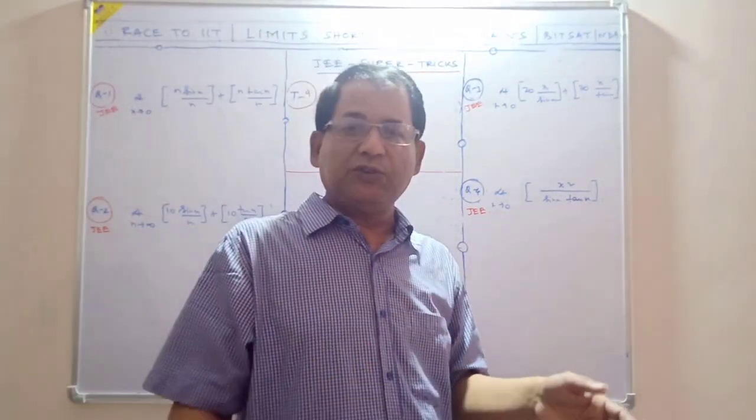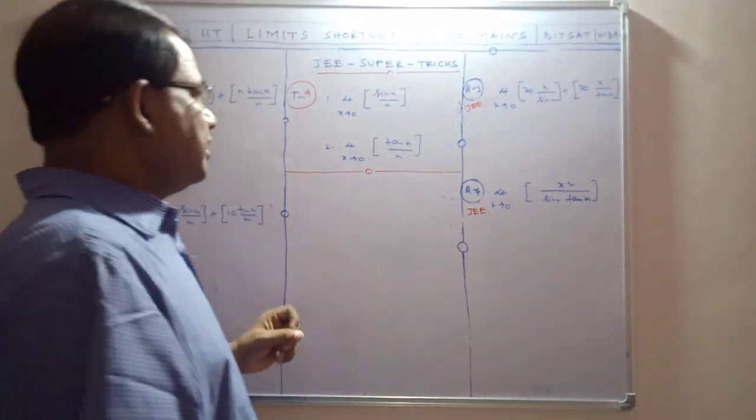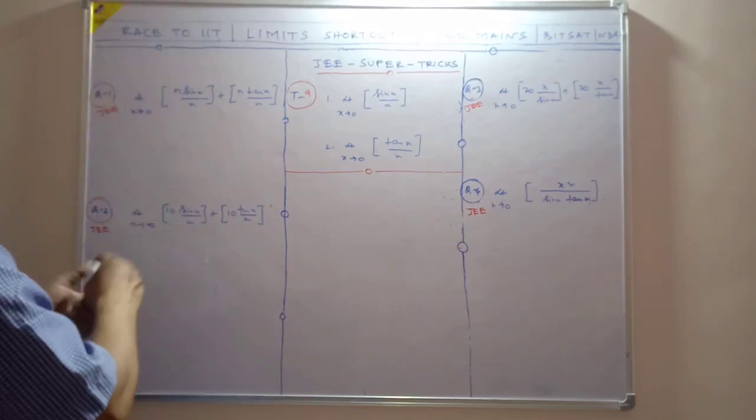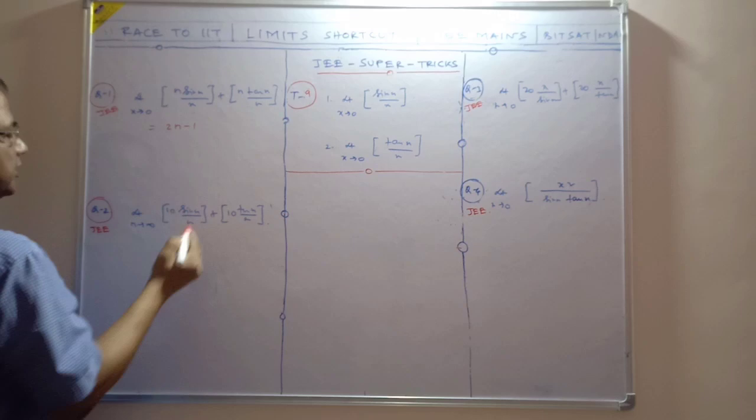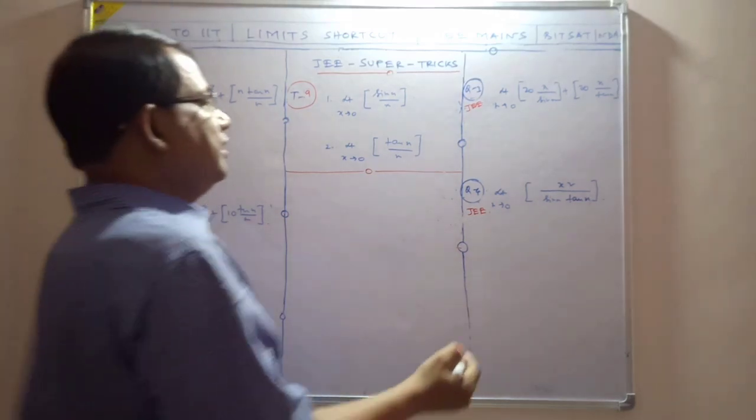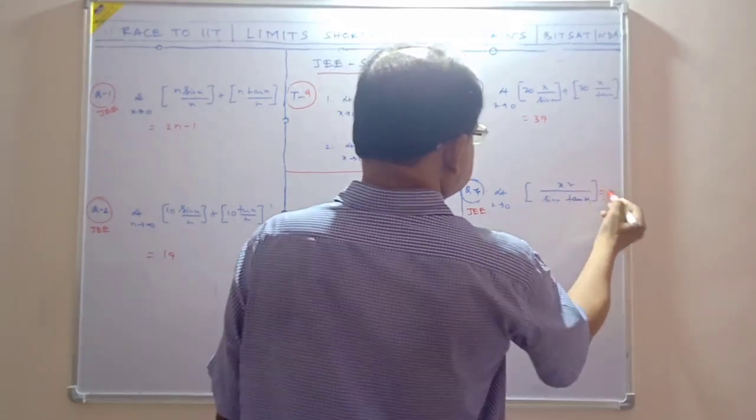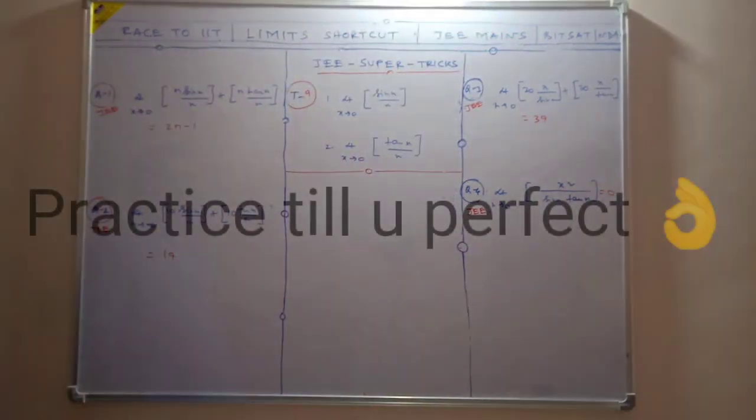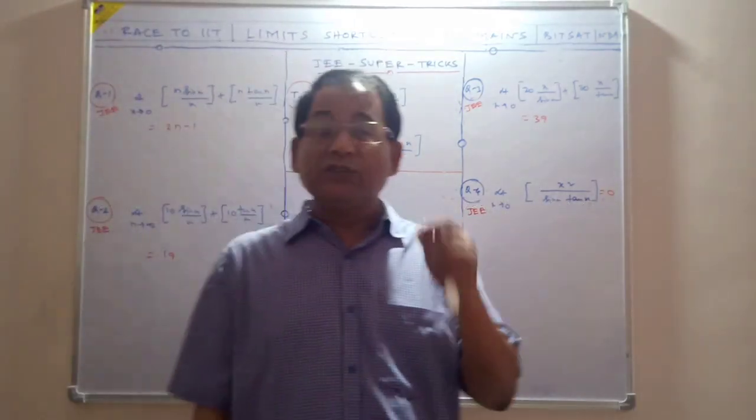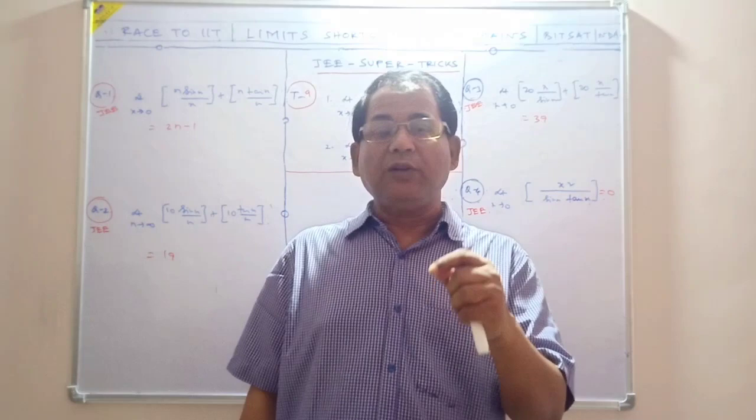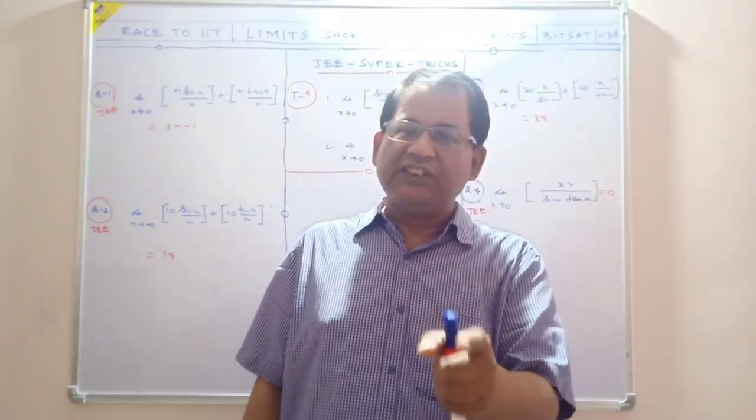You don't need to be worried about this type of function. Look at these examples: this one is 20 minus 1, which is 19; this one is 39; this one equals zero. If you know the trick, each question takes just eight seconds—that means two seconds per question. It's unbelievable, but it's true if you know the particular trick.